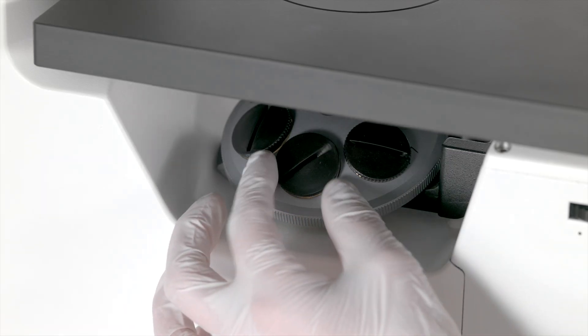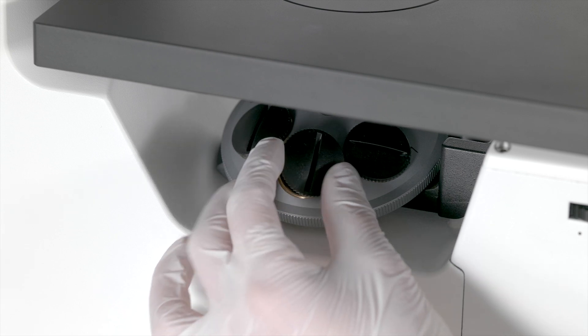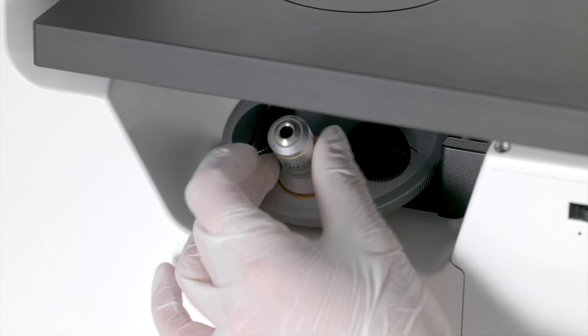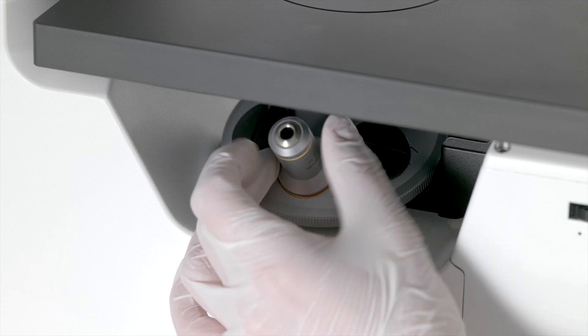To install an objective, rotate the nose piece to the position where you want the objective, remove the cover, and screw it in clockwise, taking special care not to touch the objective lens with your fingers.